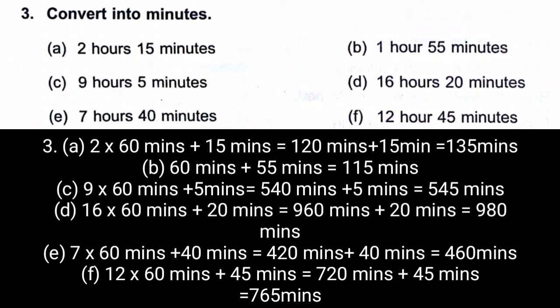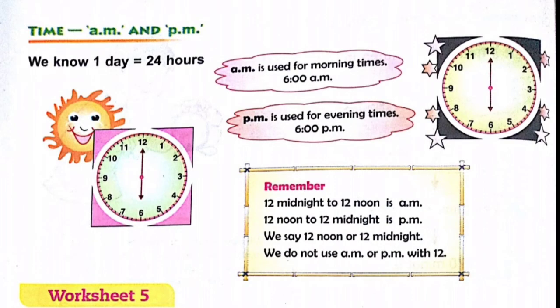Now regarding how to write AM and PM: PM means after noon — from 12 noon onwards you write PM. From 12 midnight to 12 noon, you write AM. So between midnight and noon, all times are AM.